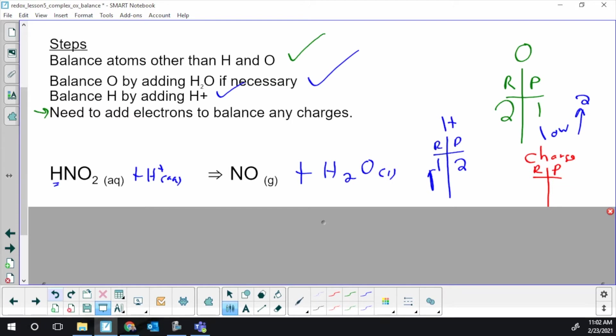We're going to add electrons to get the charge the same—doesn't have to be zero, just has to be identical. So HNO2—that's a molecule, there's no charge. We've got H+, one of them, so that's +1. We've got a molecule, no charge. Another molecule, no charge. So at the beginning we've got zero and +1, so +1 total on the reactant side.